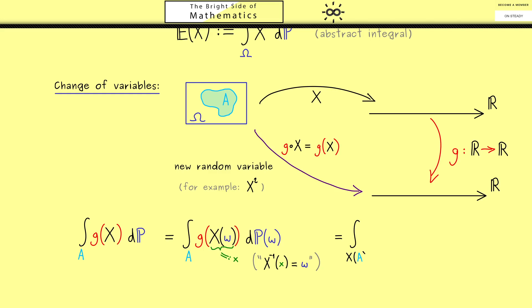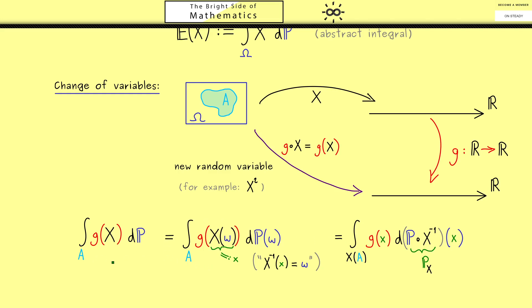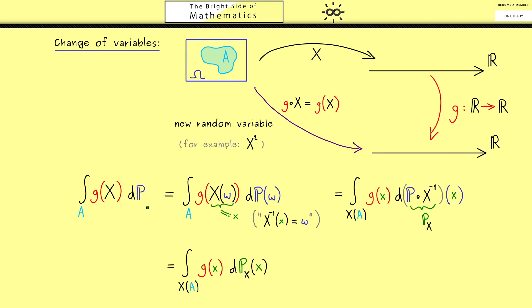First, the domain of integration is the image of A under X. Then we just have the function g of lowercase x. However, now the measure is different: it's P composed with X inverse. We read this as a pre-image, and therefore this should be the distribution of the random variable X. In other words, it's P_X. This whole thing here is very important—it's the first thing you should remember. More precisely, this abstract integral can be written as a more concrete one, as an integral over the real numbers. Still we could have another measure here, but this one is now defined on the real number line.